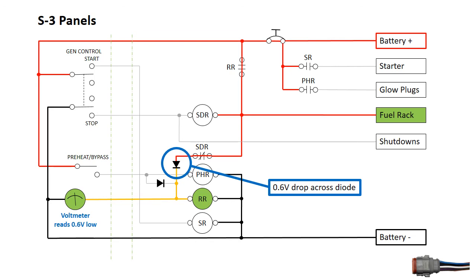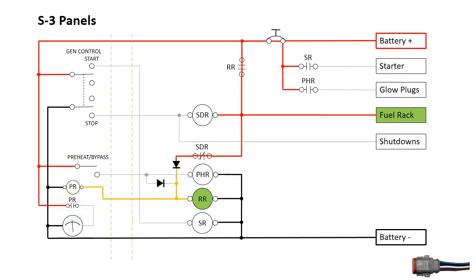We alleviate this by supplying power to the gauges through a panel relay. When the circuit is energized, the panel relay supplies full voltage to the gauges.